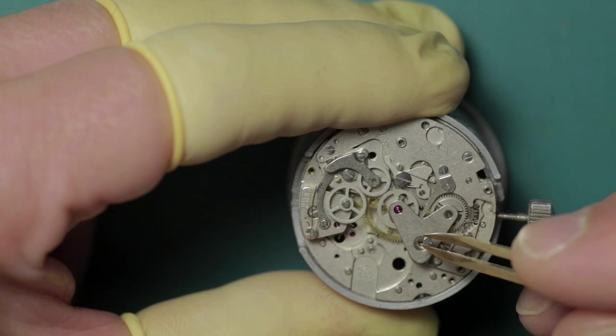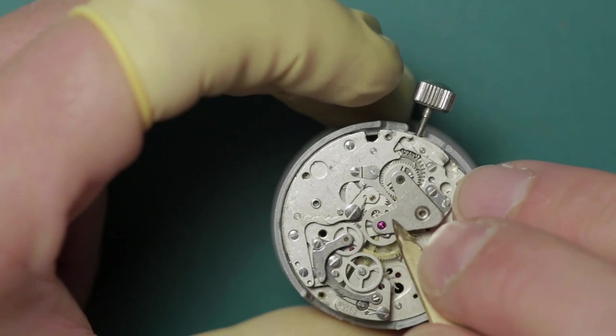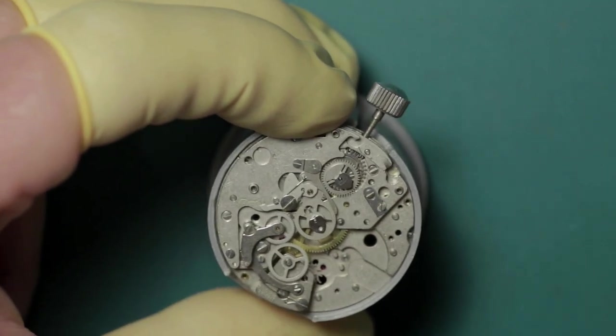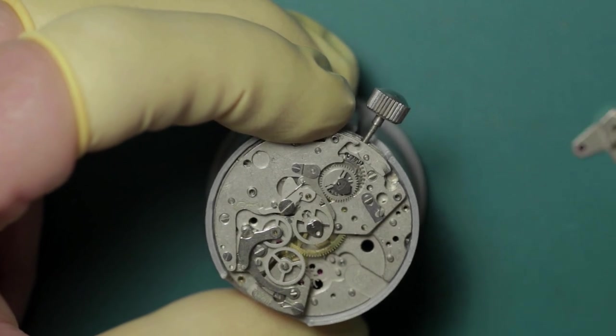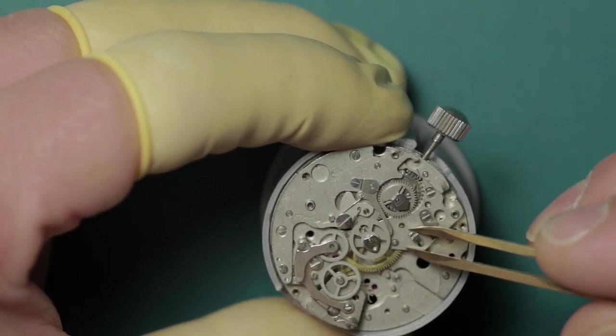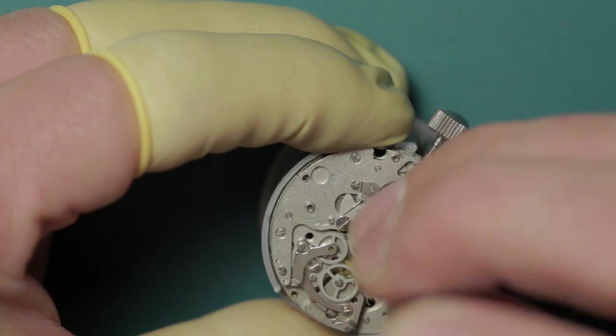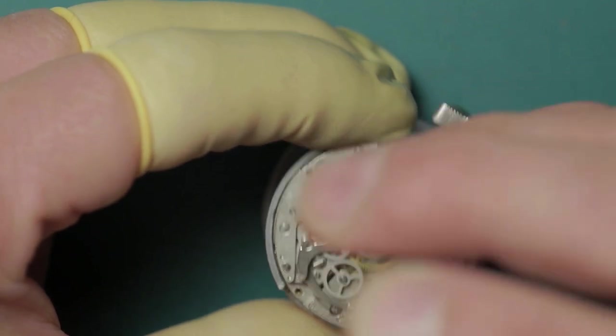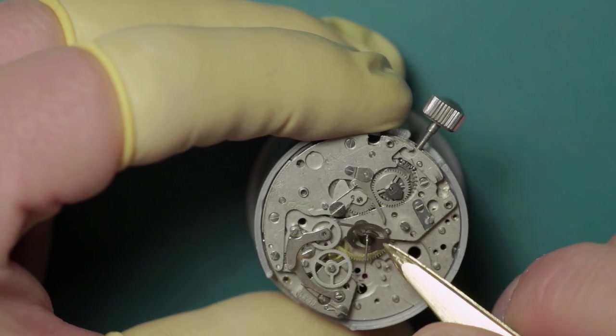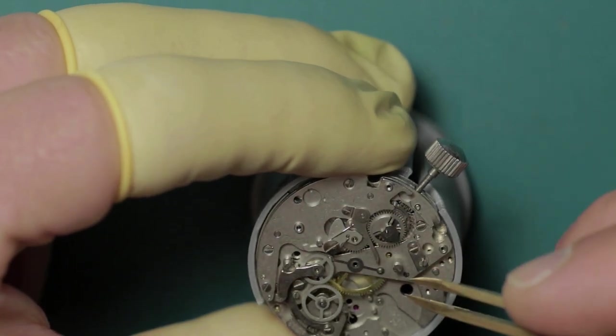One thing to be wary of when replacing screws into the chronograph bridge is that it does not protrude through and hit or damage any of the train bridge components. Some of them can do that. So here we're removing the chronograph bridge. This just simply lifts up and away with its single securing screw removed, and in this case I do refit the securing screw. I was just checking to see that it didn't actually protrude through the other side and hit anything. We remove the chronograph runner which just lifts clear away, followed by the chronograph runner tension spring. This is very similar to the one you'd find on a Valjoux 7750.